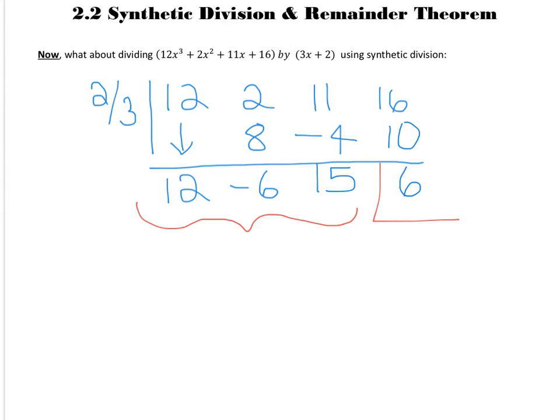Kind of working backwards, so we would have 12x squared minus 6x plus 15. This is always your constant term, and you just kind of work backwards.